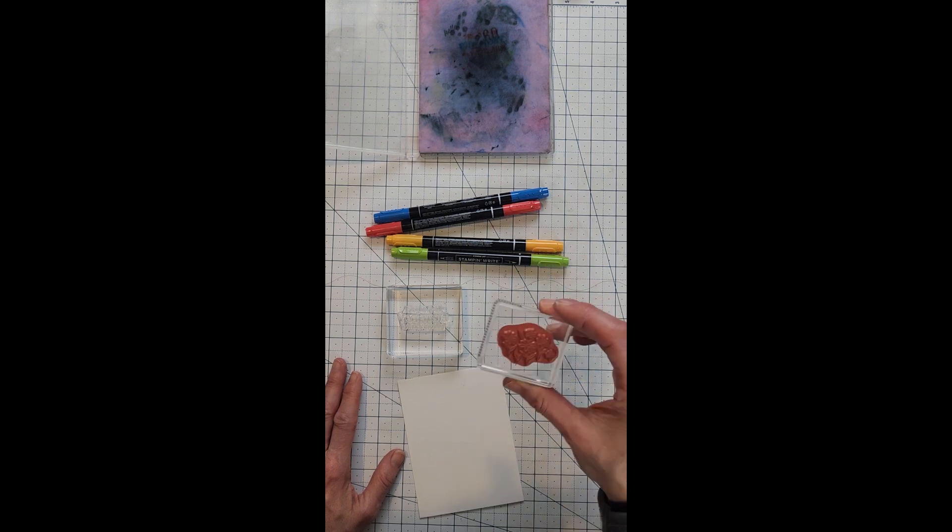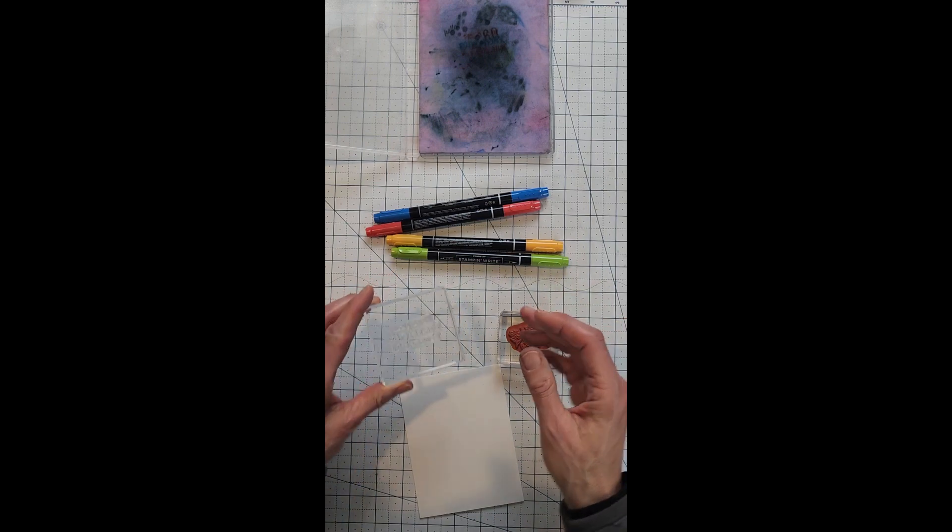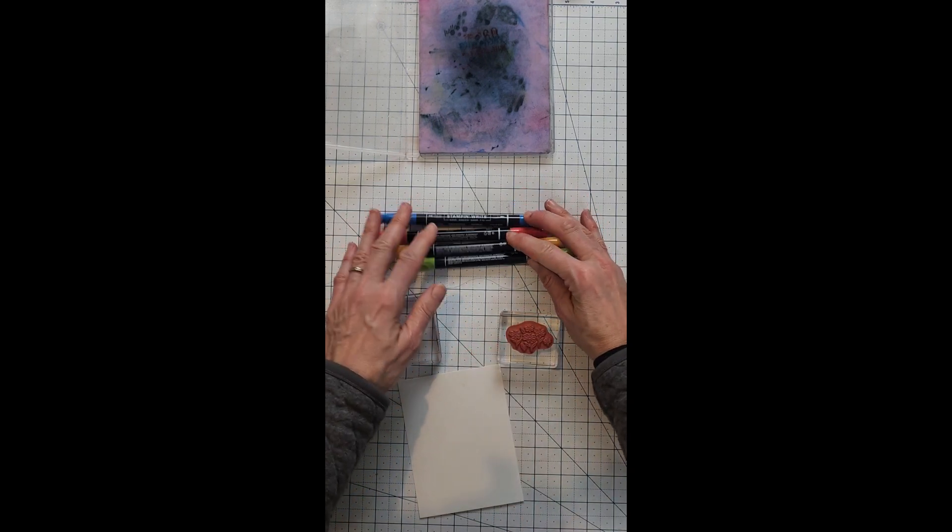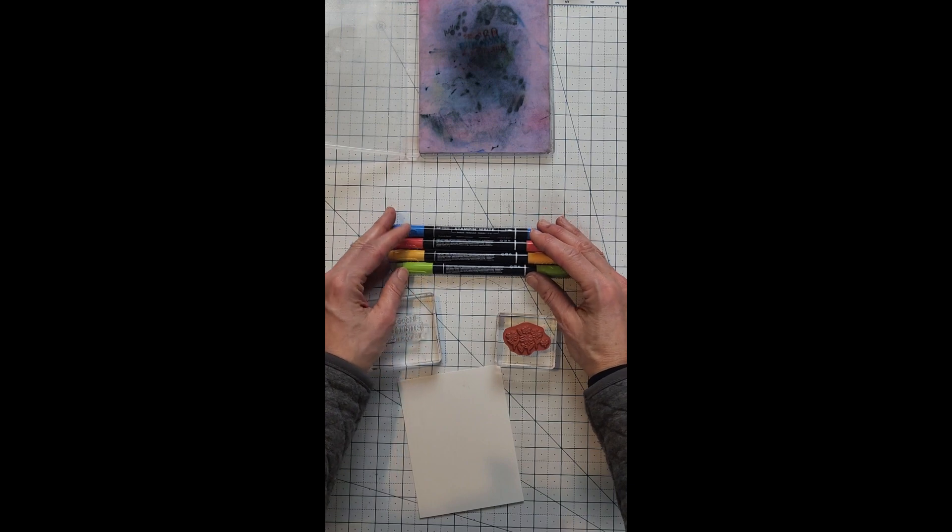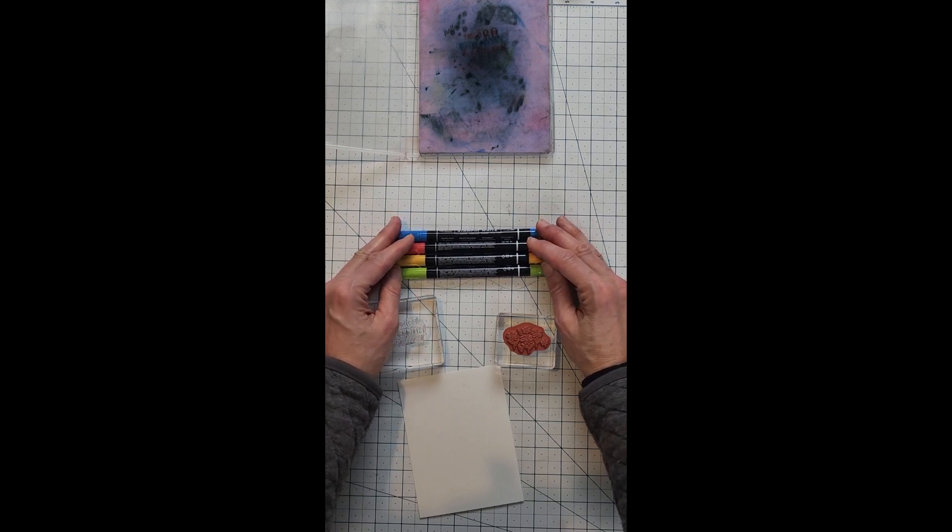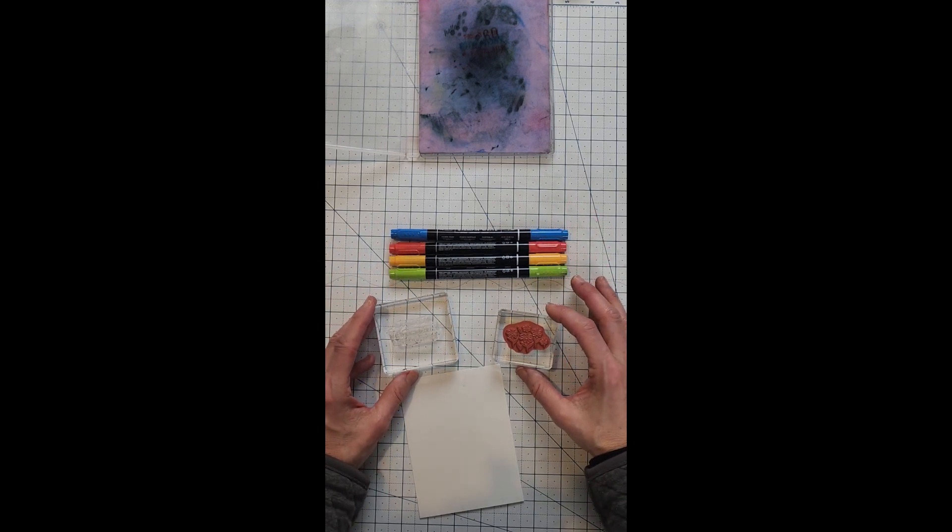You can add color directly to your cling red rubber stamps or your photopolymer stamps. Just make sure that you're using a water-based marker, not alcohol-based. Because these are water-based you can wipe them off. If you use alcohol-based, well you're kind of stuck with the stamp looking like that then.